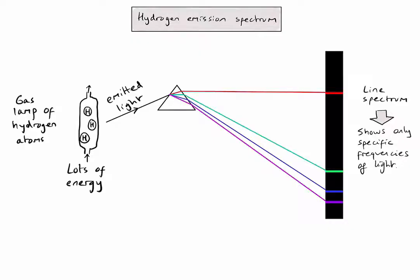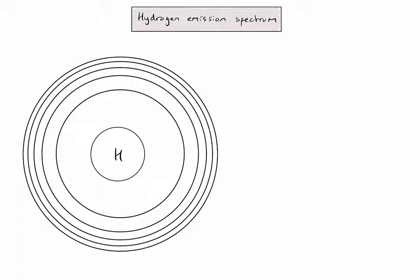Before we try to explain how those lines relate to the structure of an atom, let's think about what actually happens in a hydrogen atom when I pass lots of energy through it. Here is a simple ball model of a hydrogen atom where the nucleus is a very small dot in the middle and the rings represent different energy levels. Since hydrogen has one electron, we put that in the lowest energy level — this is known as the ground state, or the most stable state of the atom.